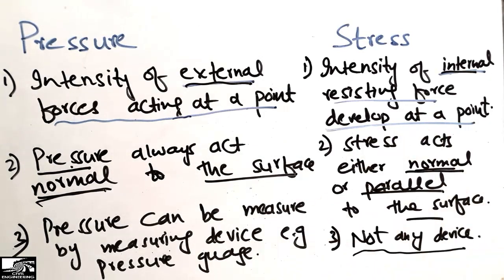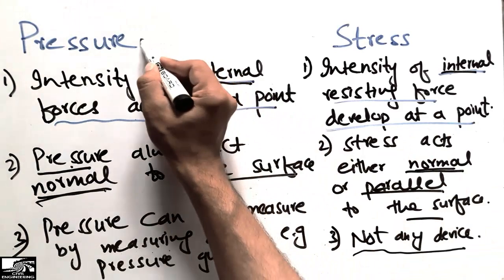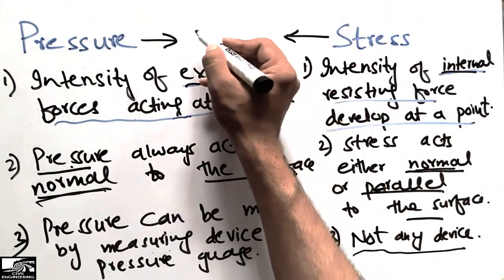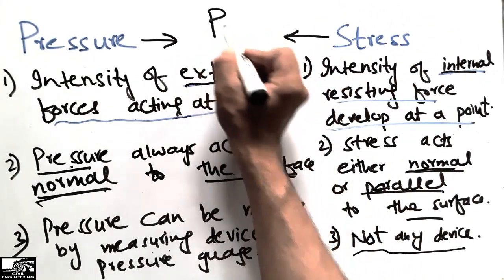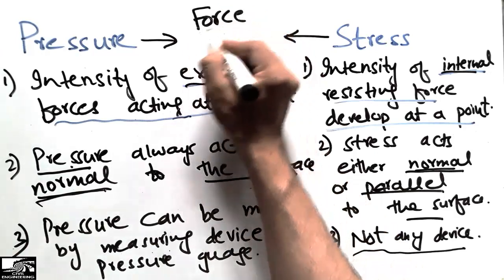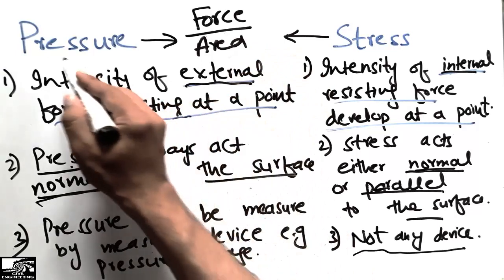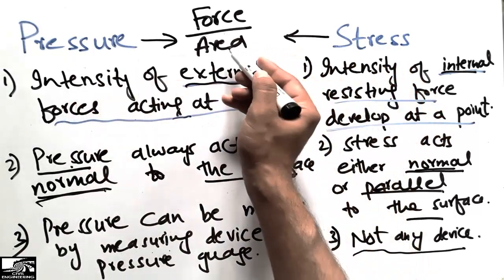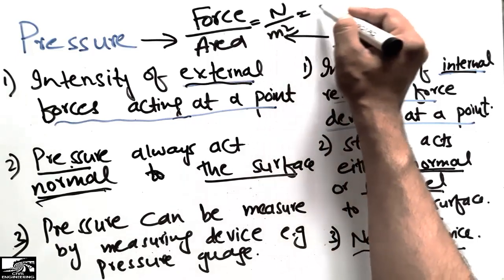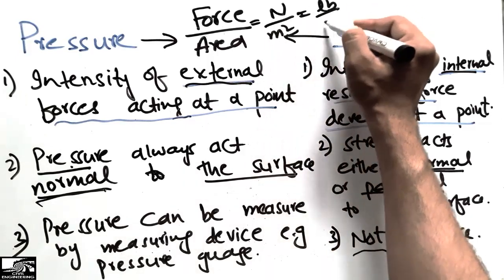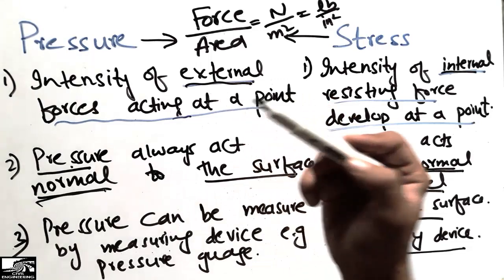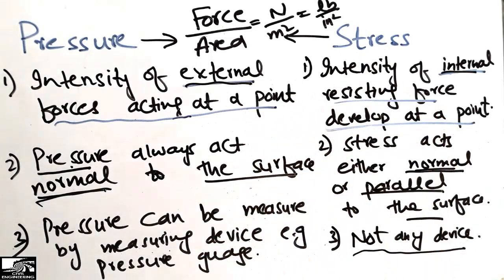Stress can only be determined indirectly by taking the load divided by area. Both pressure and stress share the same formula — force divided by area — and they have the same units, for example Newton per meter squared, kips, or pound per inch squared.